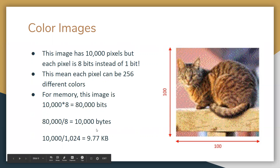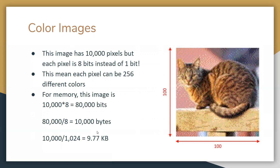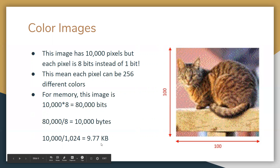We can also represent this in kilobytes, which is more common. There are 1,024 bytes in a kilobyte, so 10,000 divided by 1,024 is 9.77 kilobytes. So this image takes up 9.77 kilobytes of memory.